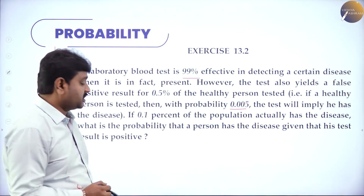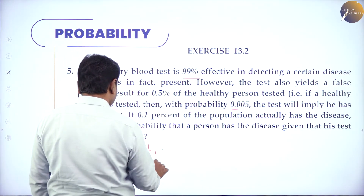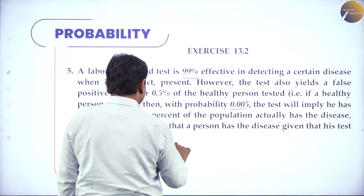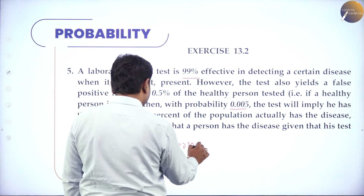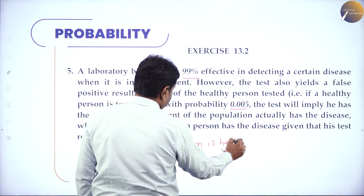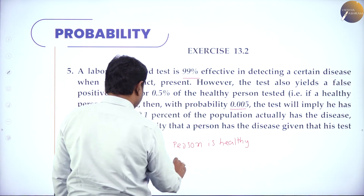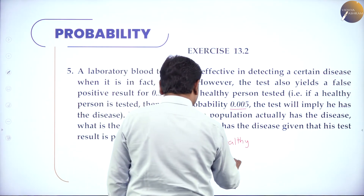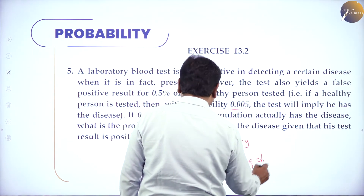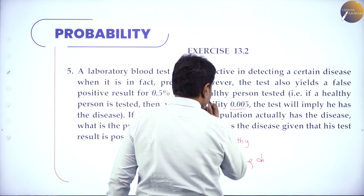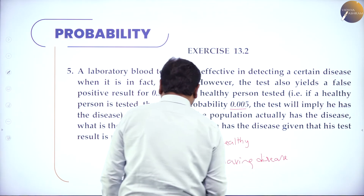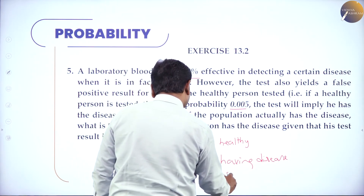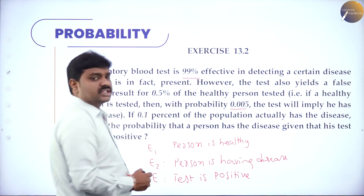Divide into events: E1 = person is healthy (no disease), E2 = person is having disease, E = test is positive. Symbolize: P(E1) = 100% − 0.1% = 99.9% = 0.999 = 999/1000. P(E2) = 0.1% = 1/1000. P(E|E1) = false positive for healthy person = 0.5% = 5/1000. P(E|E2) = test is positive for person with disease = 99.5% = 995/1000.